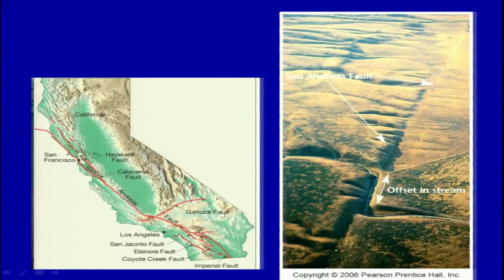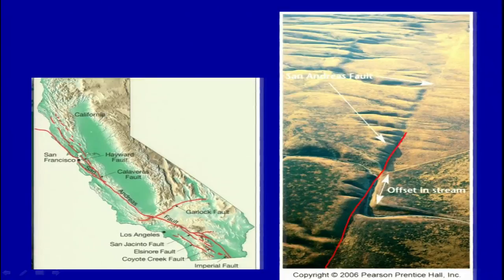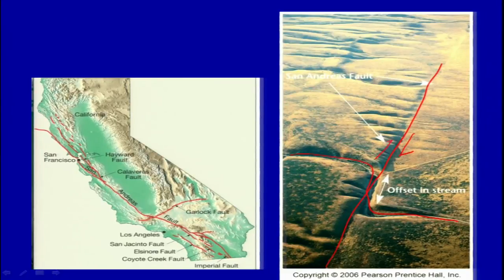In this oblique aerial photograph, you can see the fault trace along with very prominent fault scarps which have developed, and along with that you have an offset of streams. The fault runs here and the offset of the stream has been seen clearly. This is typical of a strike-slip fault, and based on the motion direction visible here, we can say this is a right lateral strike-slip fault.